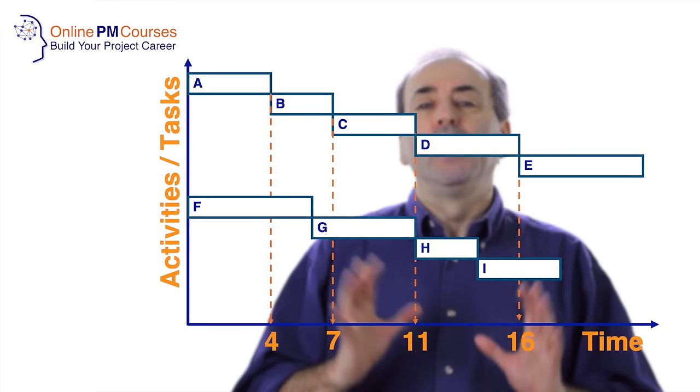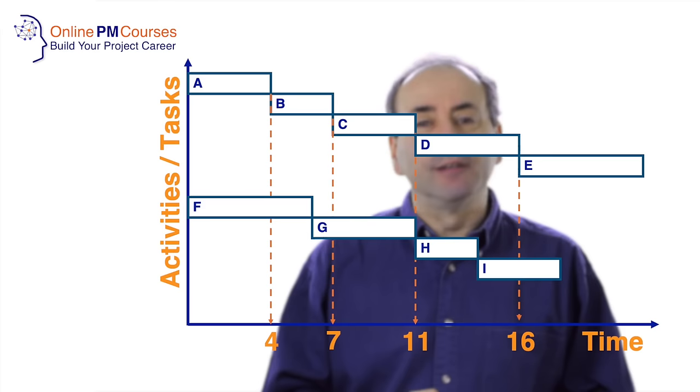The other commonly used symbol that you see on a Gantt chart is a simple geometrical shape like a triangle or a diamond that represents a milestone.